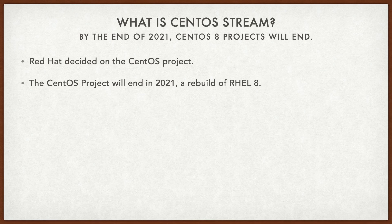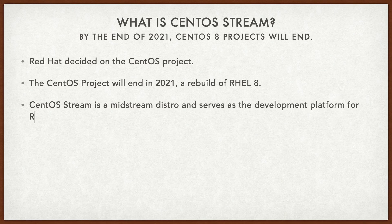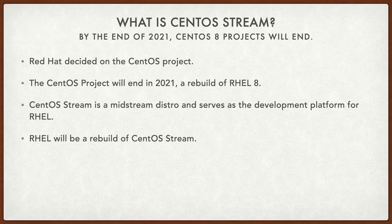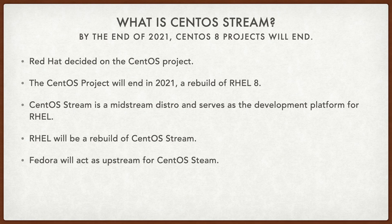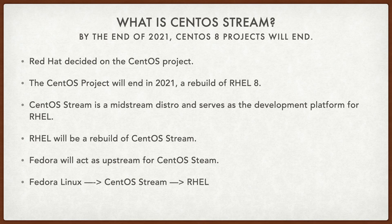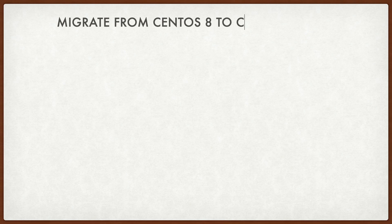The CentOS project will end in 2021 as a rebuild of RHEL 8. CentOS Stream is a mid-stream distro and it will act as the development platform for RHEL. Hence RHEL will be a rebuild of CentOS Stream from 2022. Fedora Linux will continue and will act as upstream for CentOS Stream. So CentOS Stream is in between Fedora Linux and RHEL.